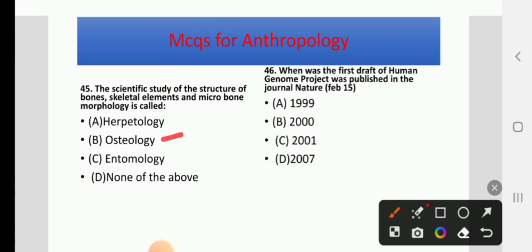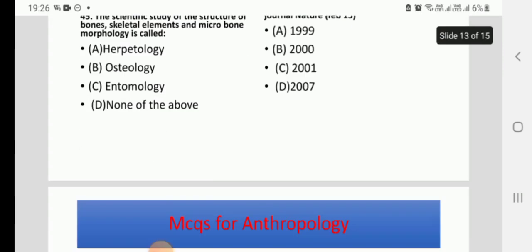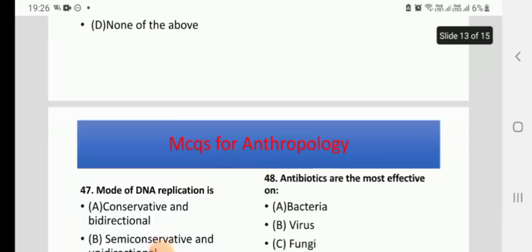When was the first draft of the Human Genome Project published in the journal Nature? Options: 1999, 2000, 2001, or 2007. The right answer is 15th February 2001.